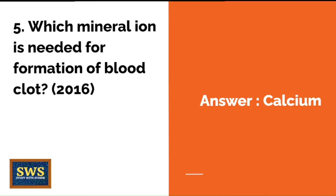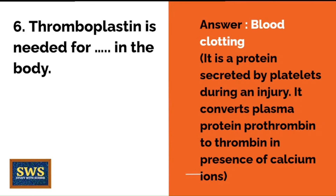Question 5: Which mineral ion is needed for the formation of a blood clot? This is from the 2016 board paper. The correct answer is calcium. Question 6: Thromboplastin is needed for what in the body? The correct answer is blood clotting. Thromboplastin is a protein secreted by platelets during an injury. It converts plasma protein prothrombin to thrombin in the presence of calcium ions.